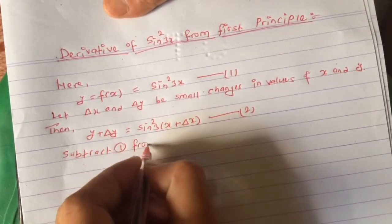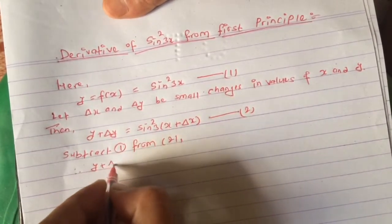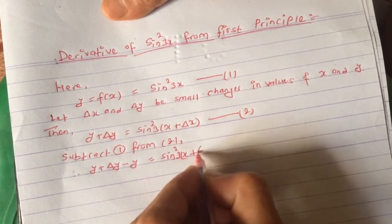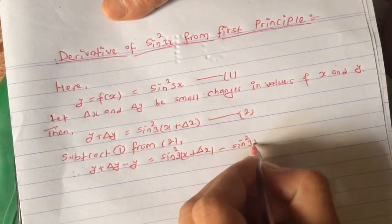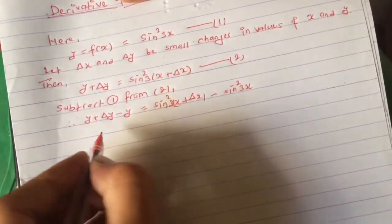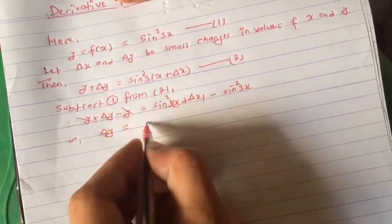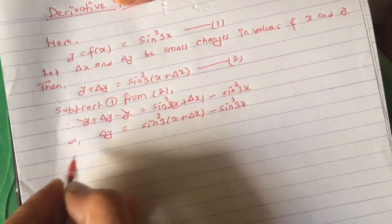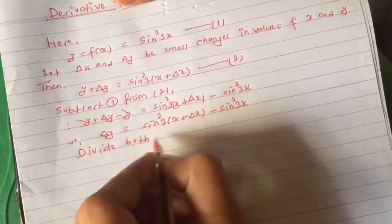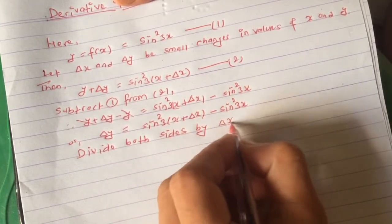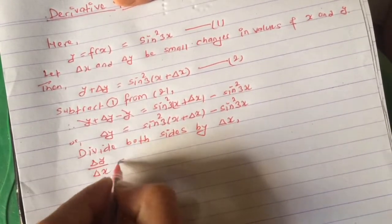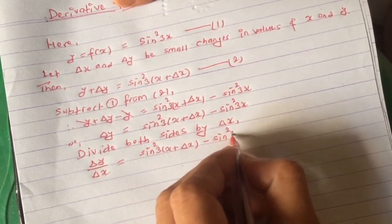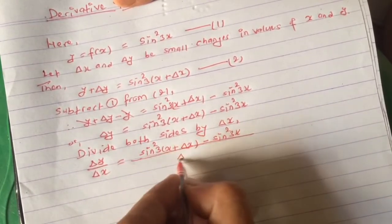Now subtract equation 1 from equation 2. Then we get y + Δy − y = sin²(3(x + Δx)) − sin²(3x). The +y and −y cancel out, leaving Δy = sin²(3(x + Δx)) − sin²(3x). Dividing both sides by Δx gives Δy/Δx = [sin²(3(x + Δx)) − sin²(3x)] / Δx.